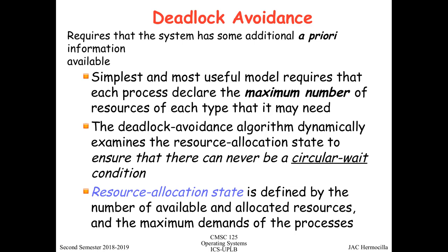Continuing on how to handle deadlocks, the second approach to handling deadlocks by making sure that it does not happen is called deadlock avoidance. What's the main difference between deadlock prevention and deadlock avoidance? In deadlock avoidance, you focus basically on preventing the circular wait condition from happening. To do that, you need to have additional or initial information about the resource requirements of the processes. One of the simplest ways is for a process to declare the maximum number of resources of each type that it may need.